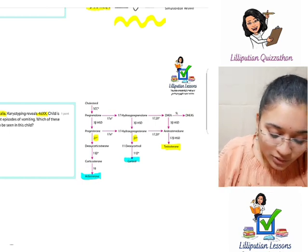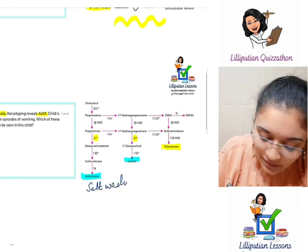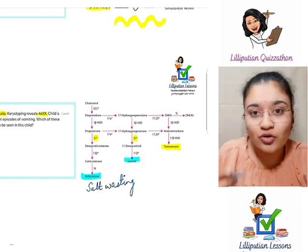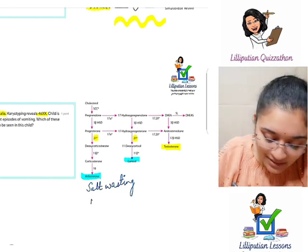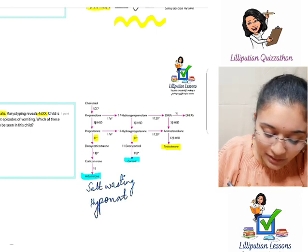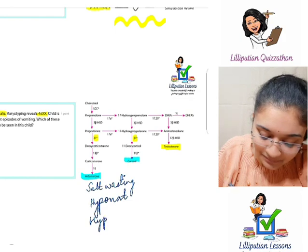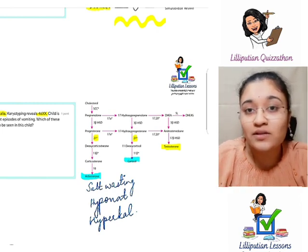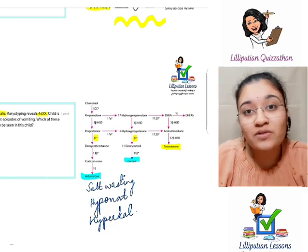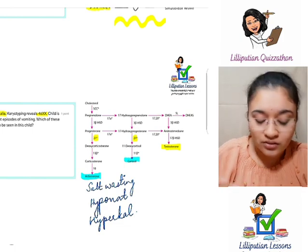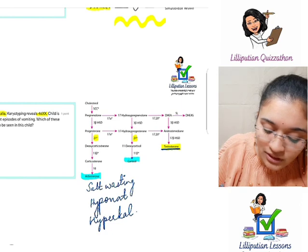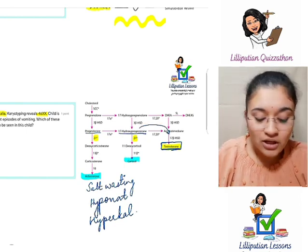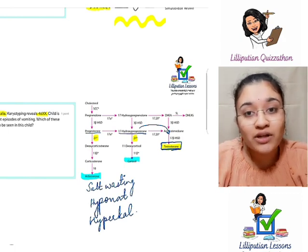Because there is no aldosterone, there is salt wasting. Aldosterone normally keeps sodium in and lets potassium flee. Without aldosterone, sodium does not stay — causing hyponatremia — and potassium does not flee — causing hyperkalemia. Without cortisol, the baby will have hypoglycemia, vomiting, and recurrent crying. Testosterone is high because progesterone and 17-hydroxyprogesterone are all diverted into testosterone production. If the child is female, there will be ambiguous genitalia at birth due to virilization.